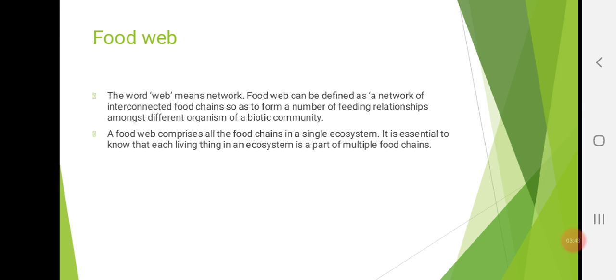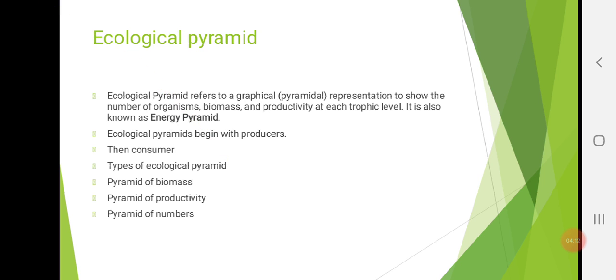Then, we have studied about food web. What is the meaning of web? Web means network. A food web can be defined as a network of interconnected food chains so as to form a number of feeding relationships amongst different organisms of biotic community. So, food web comprises of n number of food chains in a single ecosystem.